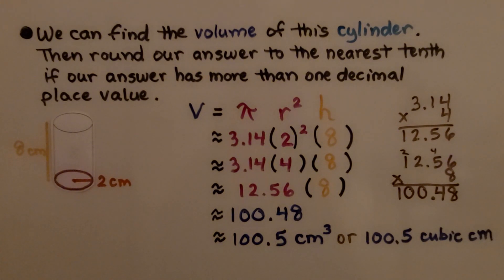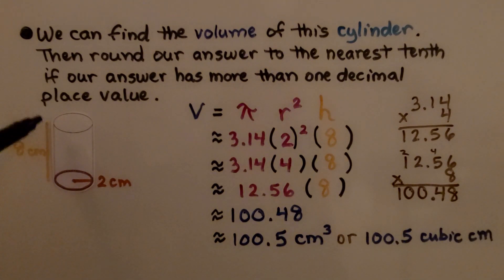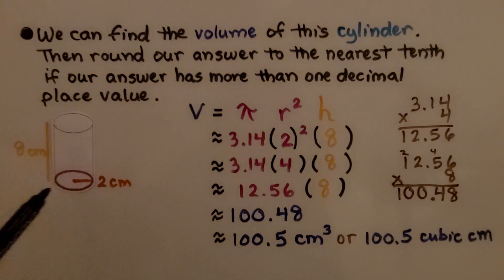We can find the volume of this cylinder. We can see the height is 8 centimeters and its radius is 2 centimeters. Then round our answer to the nearest tenth if our answer has more than one decimal place value.